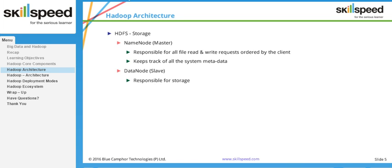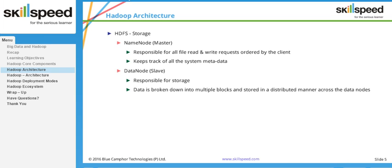Data is broken down into multiple blocks and stored in a distributed manner across the cluster. For example, with 100 DataNodes and a 512 MB file, the file is not stored as a single unit. In Hadoop 2, the default block size is 128 MB, so a 512 MB file is broken into four chunks of 128 MB, each chunk stored on a particular DataNode.